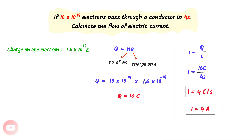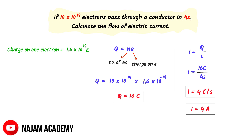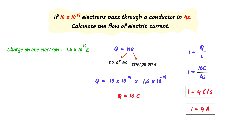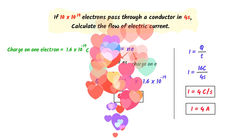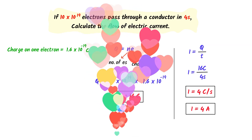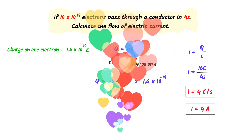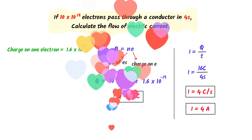So the flow of current is 4 amperes. Using this simple method, we can easily calculate all numerical problems on current. I hope that you have learned all about electric current.